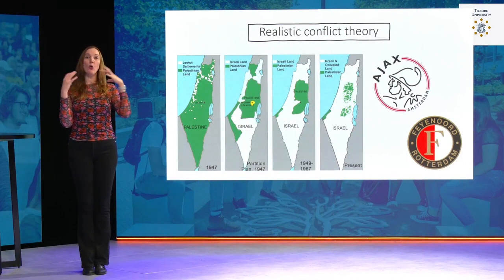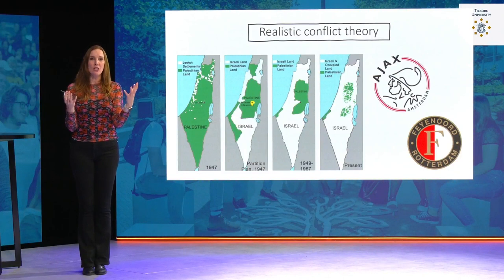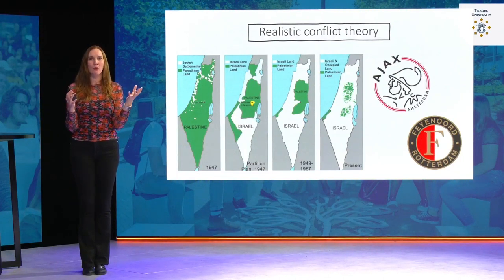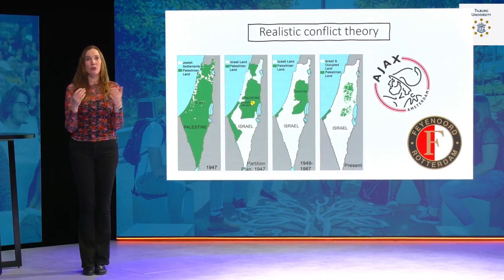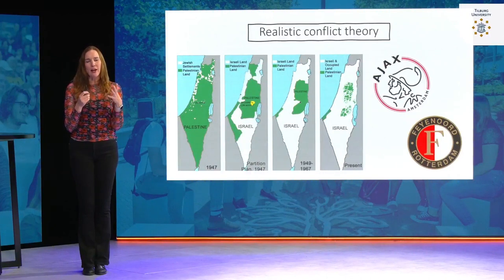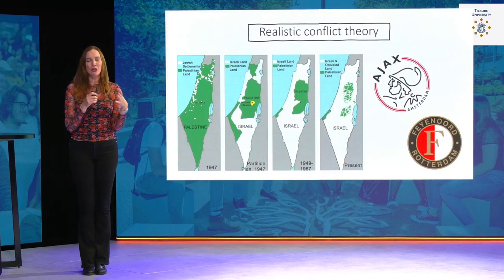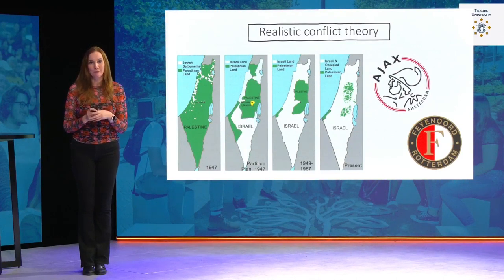We've now seen all the different causes of prejudice, so we understand why people suffer from it and especially why minority groups have to suffer from it. In the final part of the lecture, we're finally going to turn our attention to the solution.